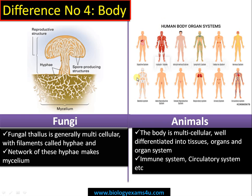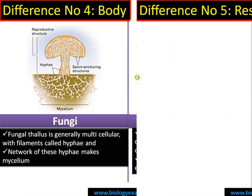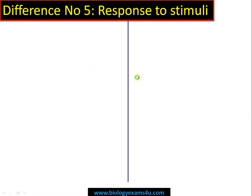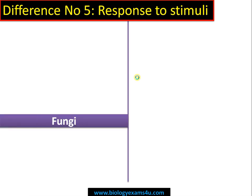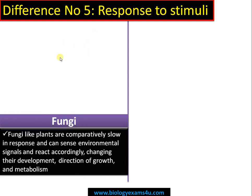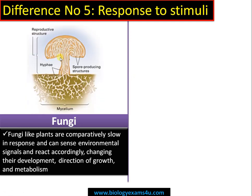Difference number five is response to stimuli. Fungi, like plants, are comparatively slow in their response. They can sense the environment and react accordingly by changing their development, growth pattern, and metabolism, but the response is quite slow in comparison with animals.